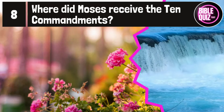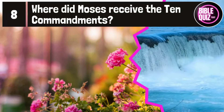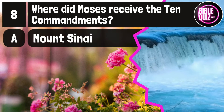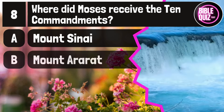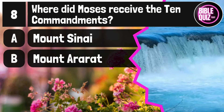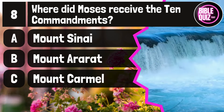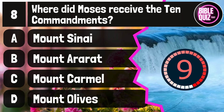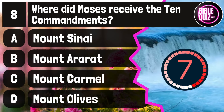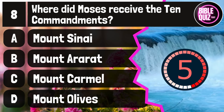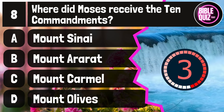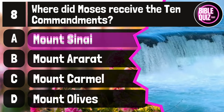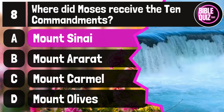Question number 8. Where did Moses receive the Ten Commandments? Option A: Mount Sinai. Option B: Mount Ararat. Option C: Mount Carmel. Option D: Mount Olives. Time to think. The answer is option A: Mount Sinai.